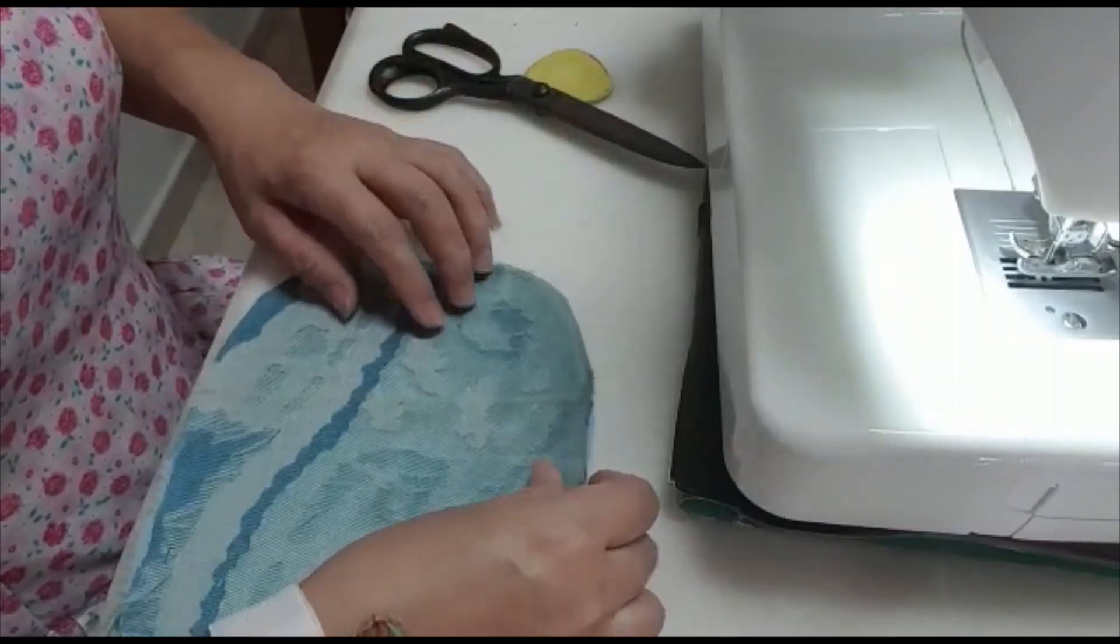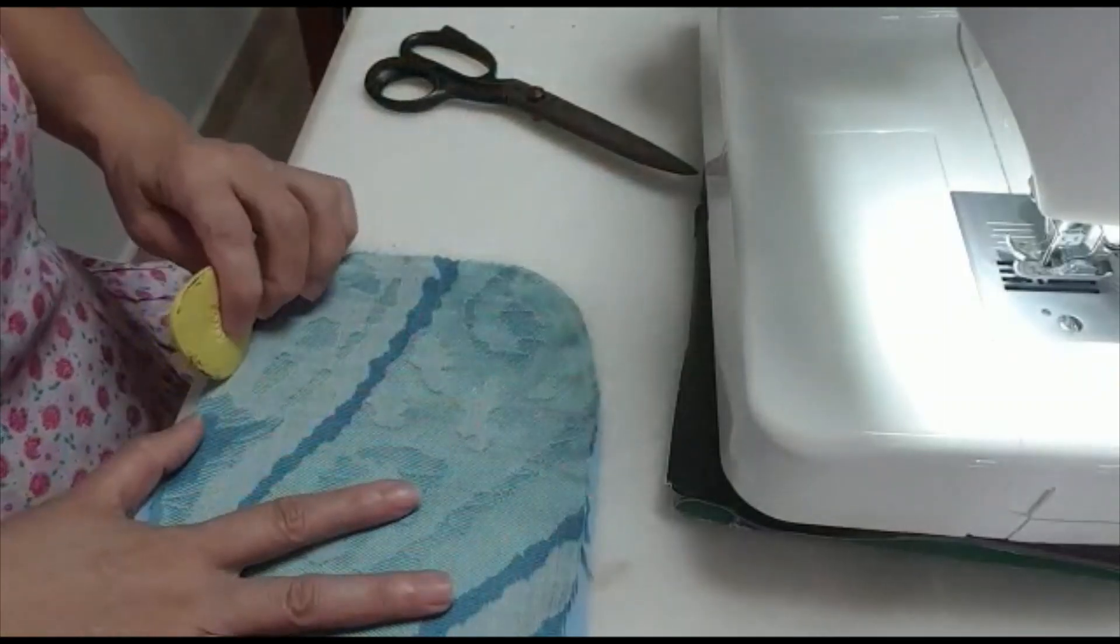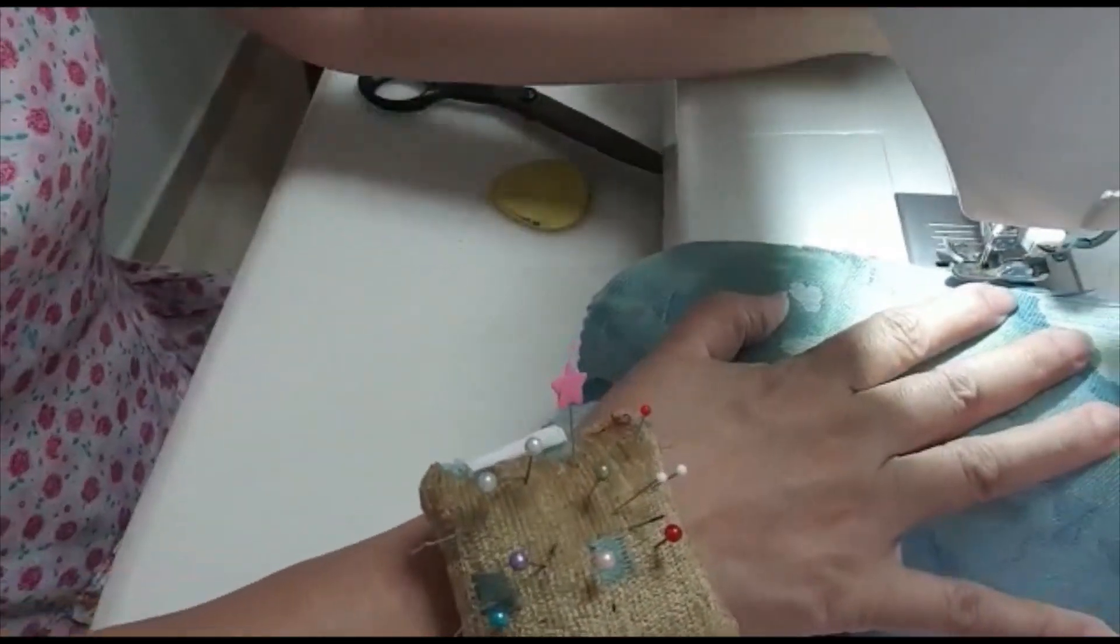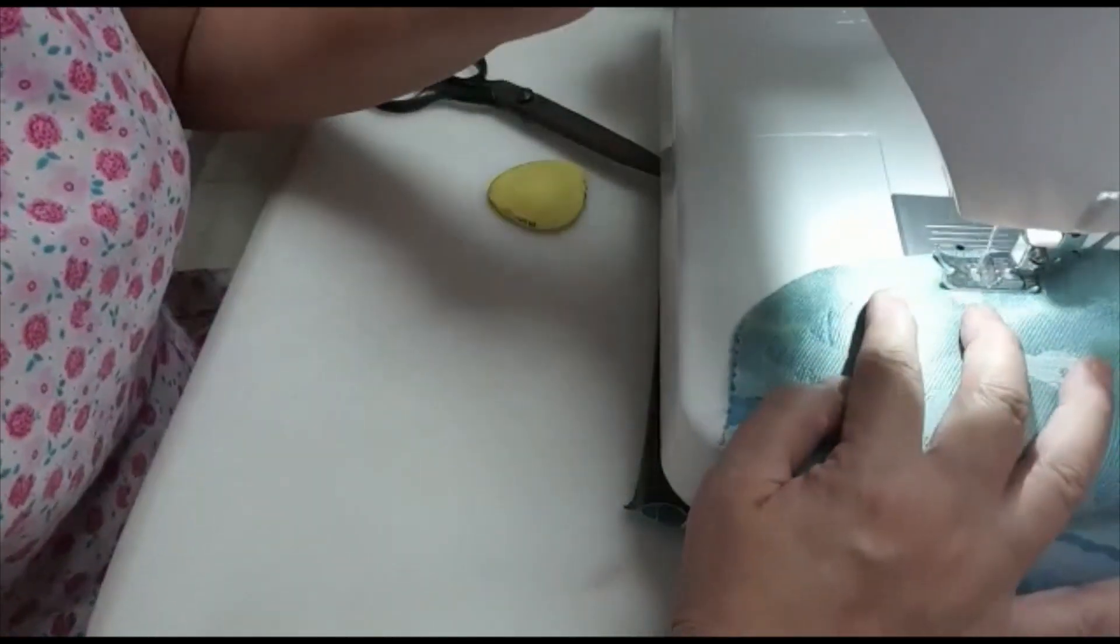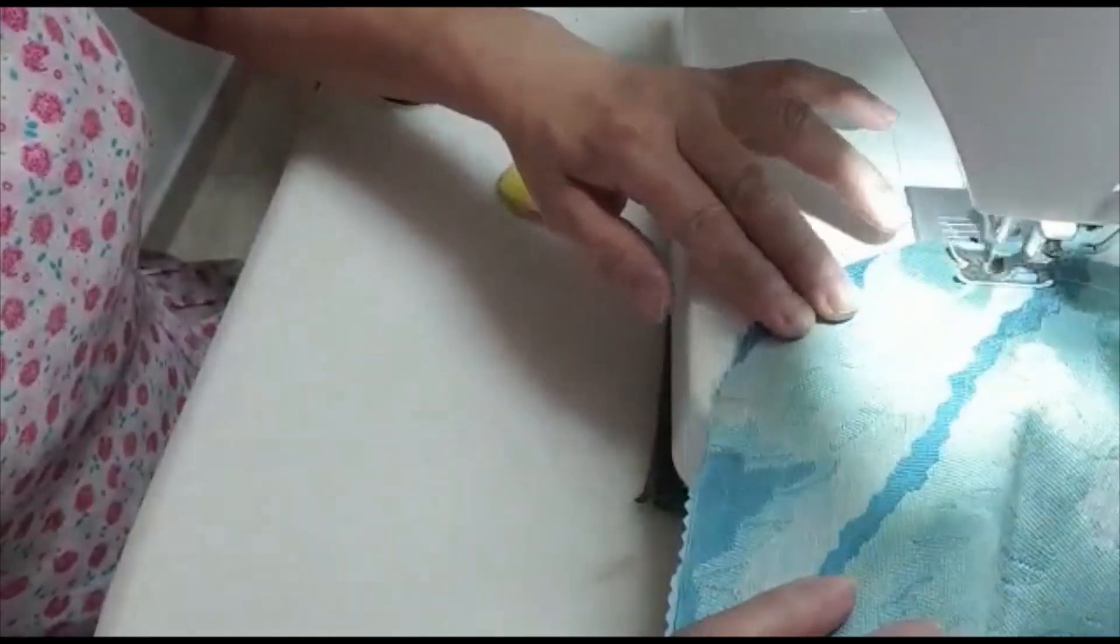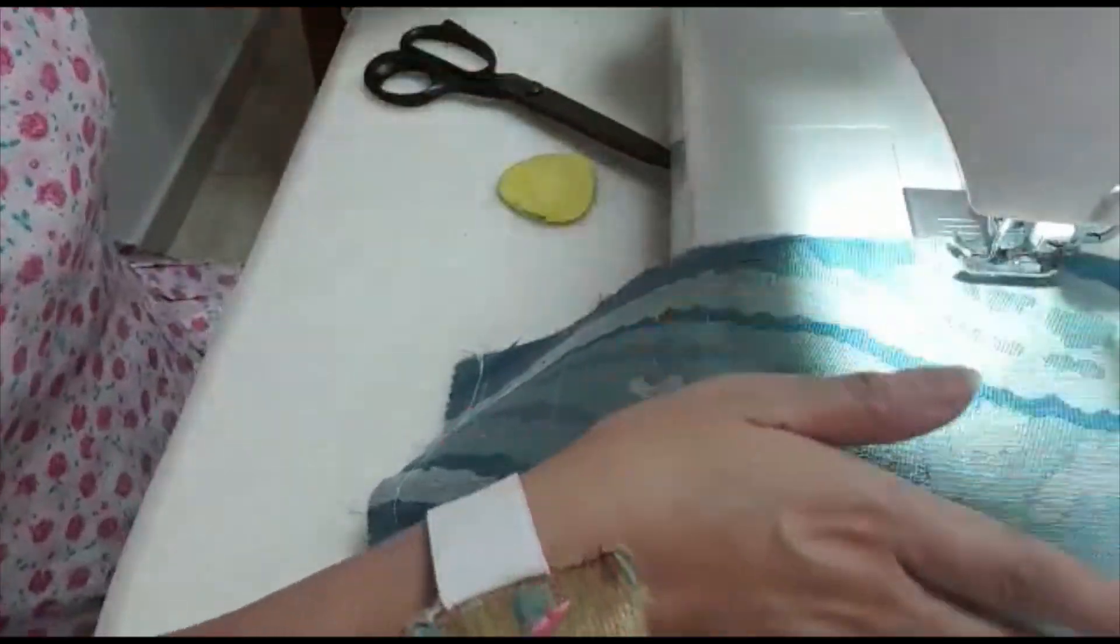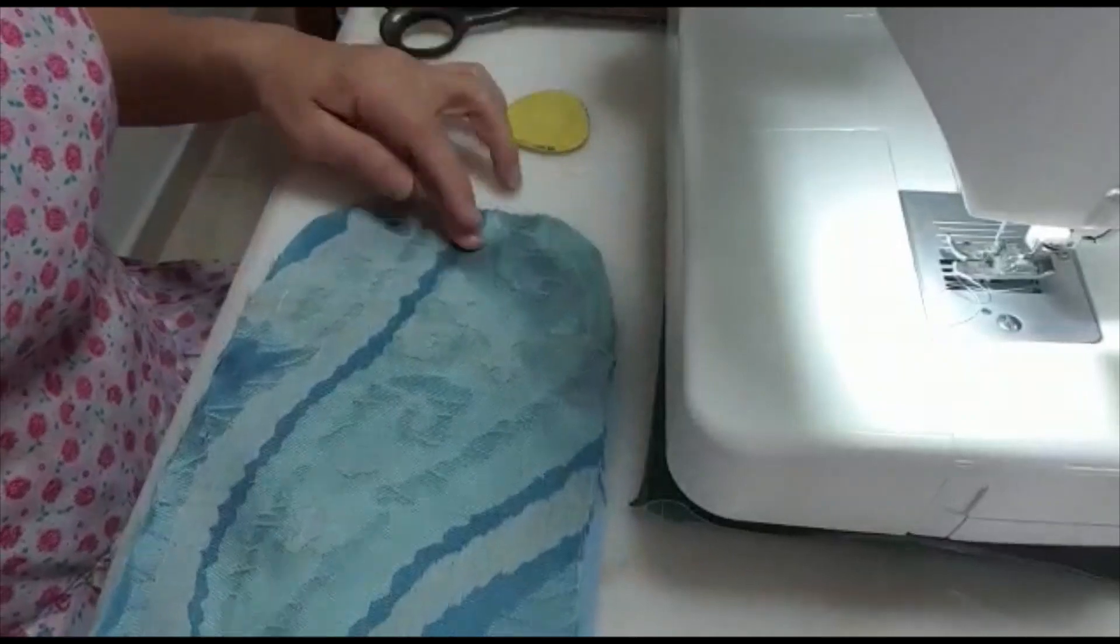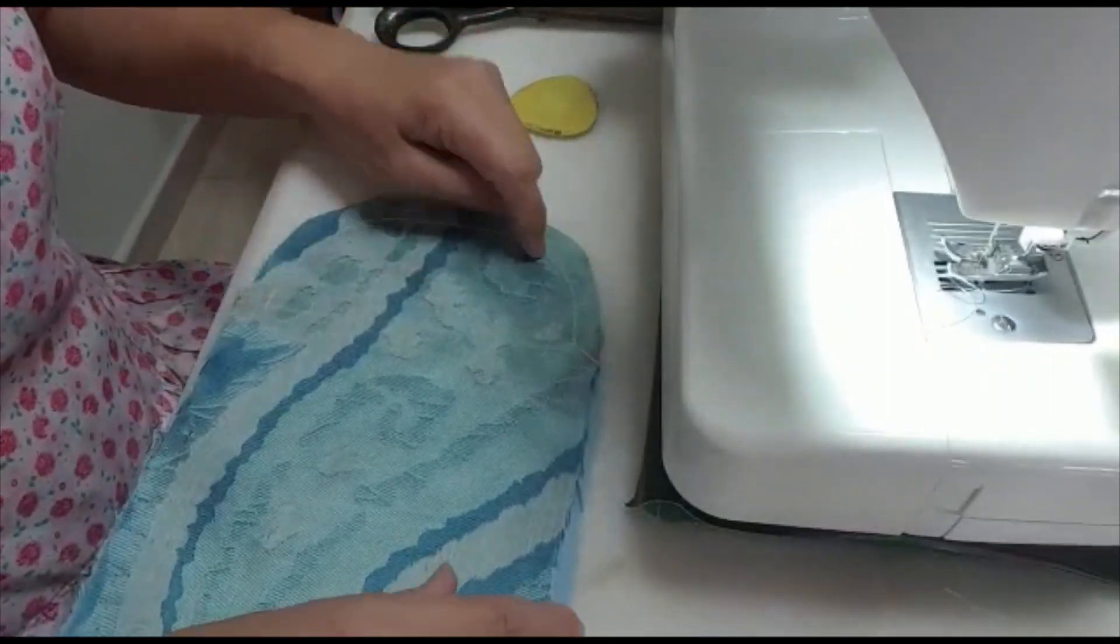This is the cover for the purse. Now we sew from here, 1 centimeter, all the way down to this line that we have drawn just now. Do it slowly. Curves are not easy to sew but you can do it slowly. We have two lines: the bottom one centimeter and the top, the curve, one centimeter also.